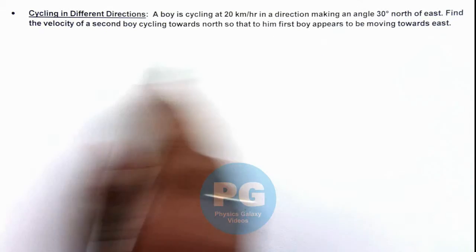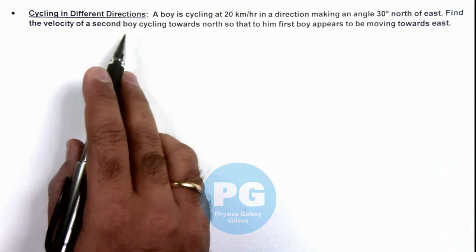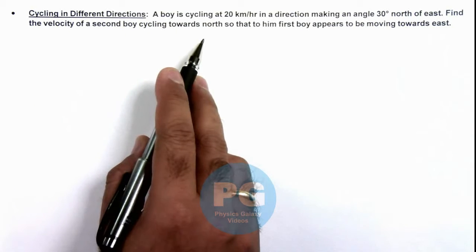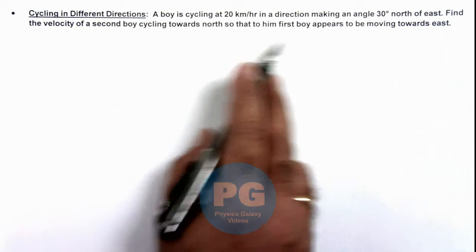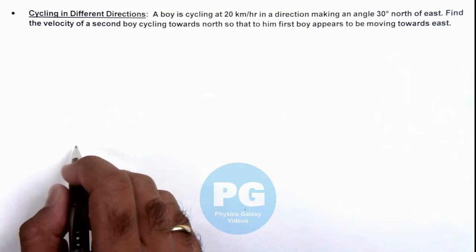We are required to find the velocity of a second boy who is cycling toward north, so that to him the first boy appears to be moving toward east.